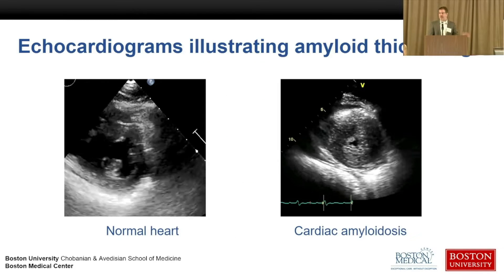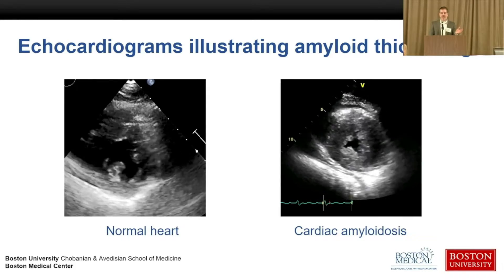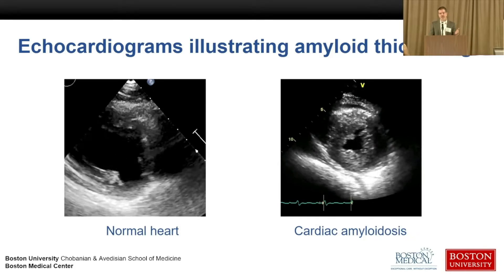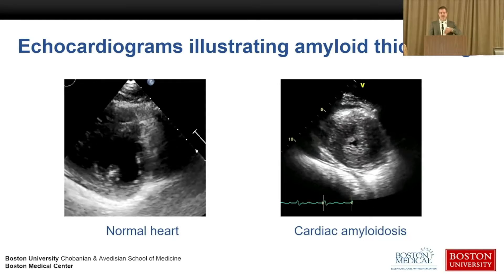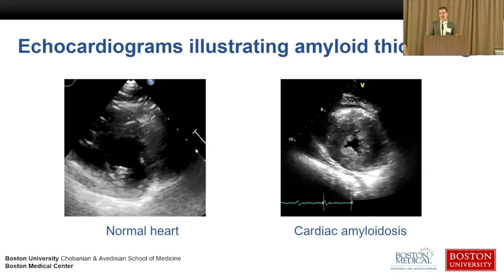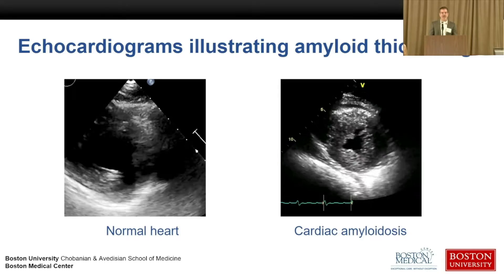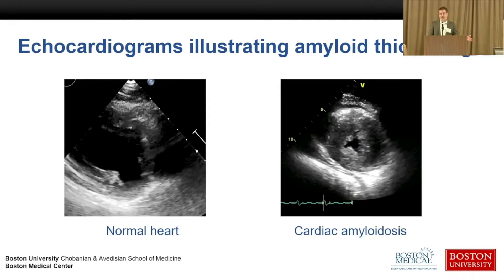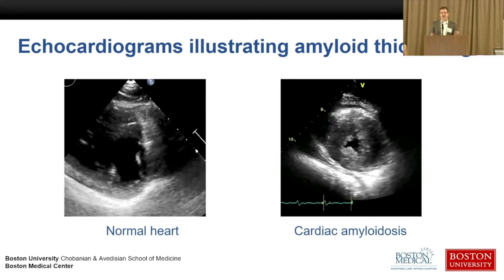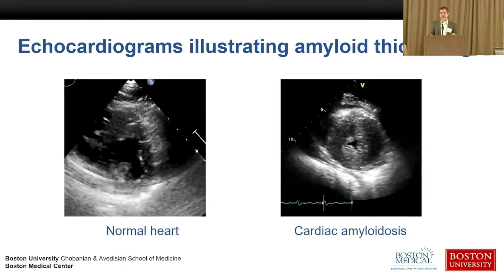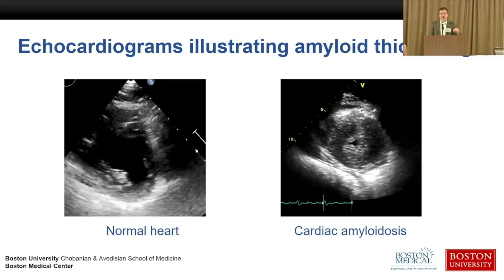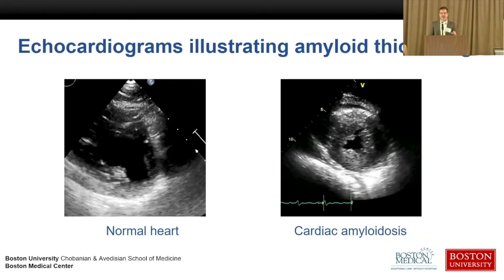These are two echocardiograms showing a normal heart on the left and a cardiac amyloidosis heart on the right. This is cardiac ultrasound — the same kind of ultrasound used during pregnancy. The ultrasound beams bounce into the body and off tissues to create a moving picture. You don't need to be a doctor to appreciate that the amyloid heart is thicker. Notably, both hearts are squeezing normally, illustrating that you can have significant impairment with a normal ejection fraction.